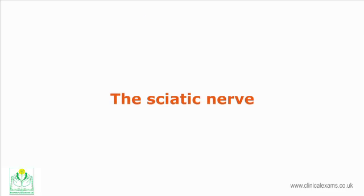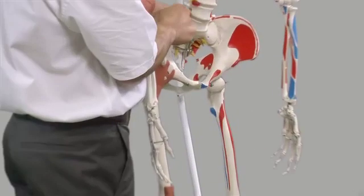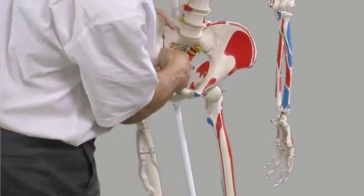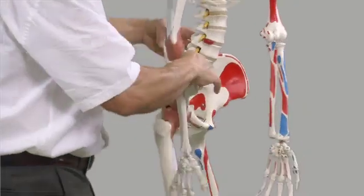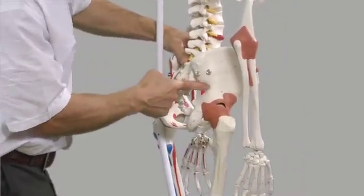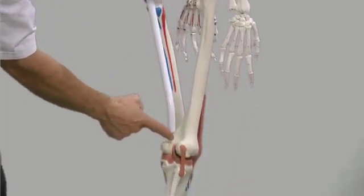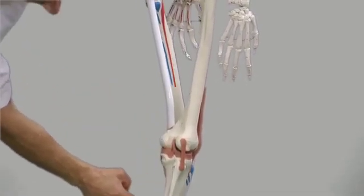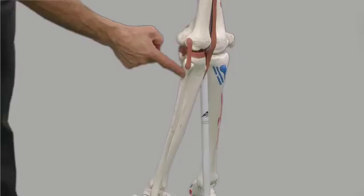The sciatic nerve is the largest part of the lumbosacral plexus and it emerges from L4 through to S3. It travels deep to the glutei and into the hamstrings, supplying the posterior muscles of the thigh. Before the knee it divides into the tibial nerve, which travels directly inferiorly, and the common peroneal nerve, which veers laterally and around the neck of the fibula.